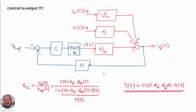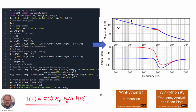Here we have the model of the converter in closed loop. This is the closed loop response: the control-to-output transfer function, which is the output voltage over the reference voltage. We compare this with the open loop control-to-output transfer function Gd, which gives the output voltage over the duty cycle. Note that we are using a PWM gain equal to one. From the control-to-output transfer function, we can also extract the loop gain T, which is this factor shown here.